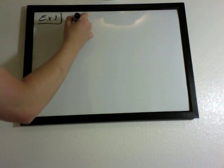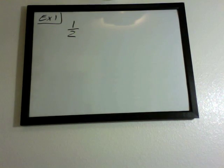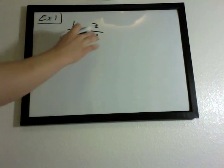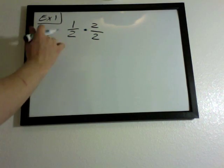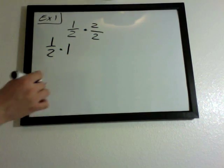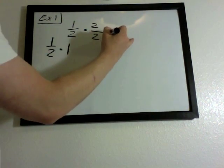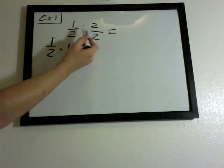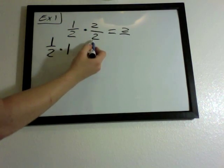Now we're going to understand principles of fractions — how to simplify them. Say we have one over two, or one half, and we multiply this by two over two. We know something over something is just one, so we're not changing this problem — we're just multiplying one half by one. To multiply this, you just multiply top to top, bottom to bottom. So one times two is two, and two times two is four, giving us two over four.